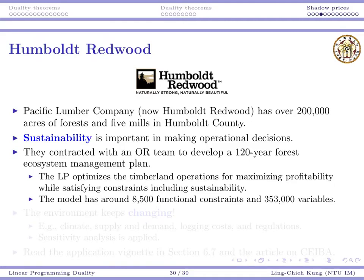So now, because they need to address this issue, they contracted with an OR team to develop a model for forest ecosystem management plan. What's very interesting here is that this plan, the planning horizon is 120 years. So if we are talking about forest, that's definitely reasonable, but somehow it's much longer than most of the typical planning horizons of typical products. Eventually, the team formulates a linear program that can optimize the timberland operations for maximizing profitability and satisfying constraints, including sustainability constraints.